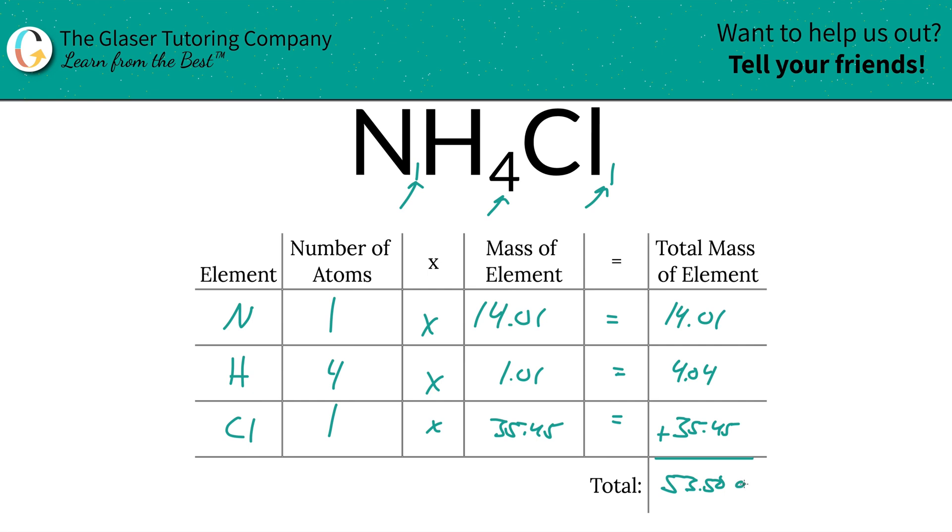And the units are in grams per mole because we're finding molar mass. That's all there is to it. Now you know how to find the molar mass of ammonium chloride.